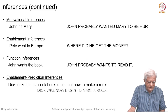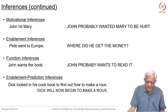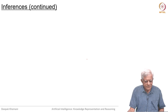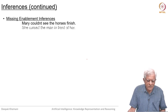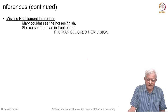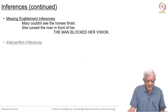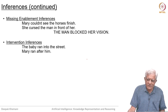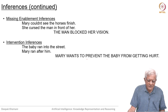Enablement prediction inferences: Dick looked in his cookbook to find out how to make a roux — Dick will now begin to make a roux. Missing enablement inferences: Mary could not see the horses finish, she cursed the man in front of her — inferred that the man blocked her vision. Intervention inferences: The baby ran into the street, Mary ran after him — Mary wants to prevent the baby from getting hurt.